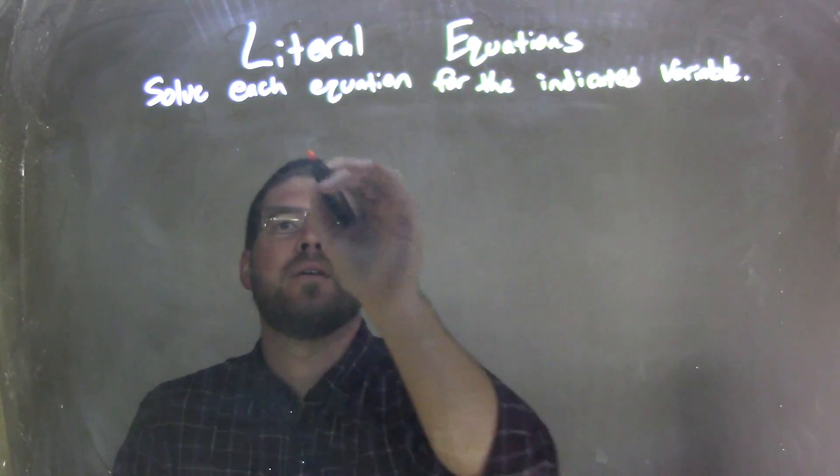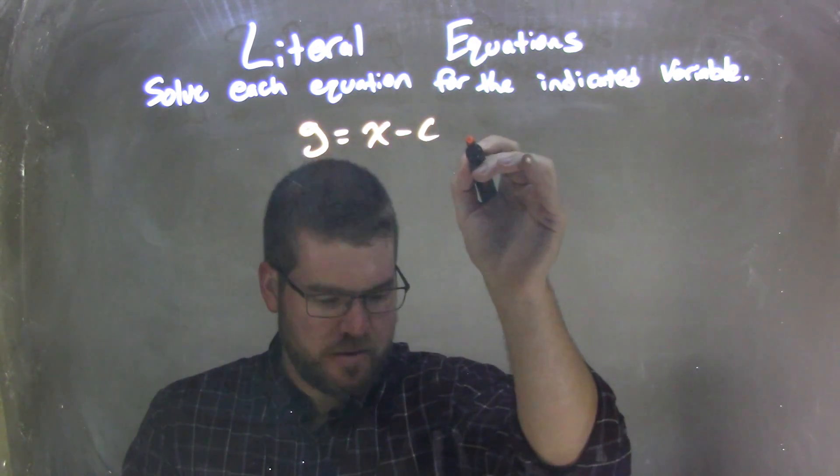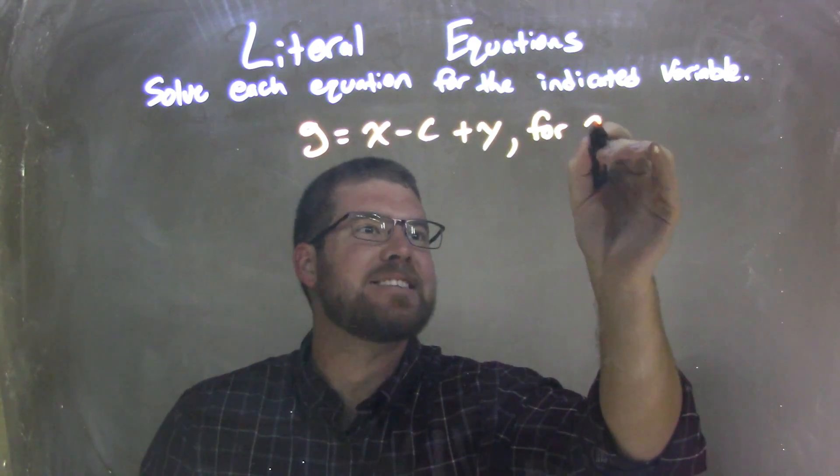So if I was given this equation, g equals x minus c plus y, and we're solving that for x. Okay?